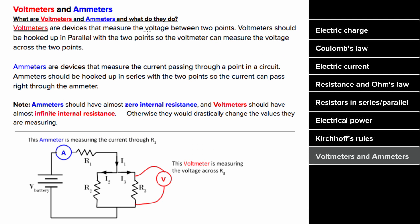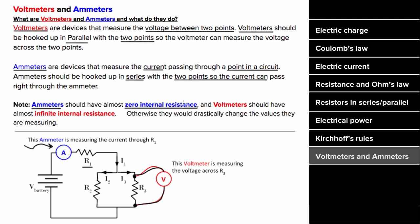Voltmeters are the device that you use to measure the voltage between two points in a circuit. When hooking up a voltmeter, you've gotta hook it up in parallel between the two points you wanna find the voltage across. Ammeters are the devices we use to measure the electrical current that passes through a point in a circuit, and ammeters have to be hooked up in series with the circuit element you wanna determine the current through. For these electrical devices to work well, the ammeter should have almost zero internal resistance, thereby not affecting the current that flows through the circuit, and voltmeters should have near infinite resistance so that they don't draw any of the current from the resistor.